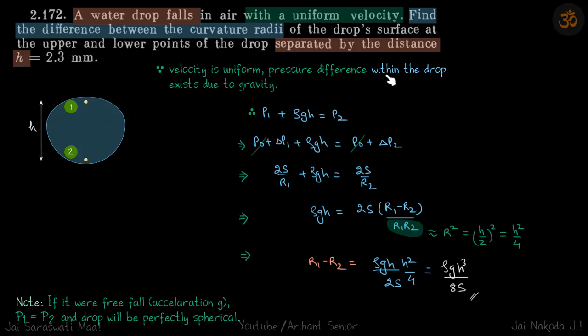Since velocity is uniform, pressure difference within the drop exists due to gravity, and that pressure difference will be ρgh. So p1 plus ρgh is equal to p2, and because the outside atmospheric pressure is p0, p1 we can write as p0 plus Δp1 and p2 will be p0 plus Δp2.